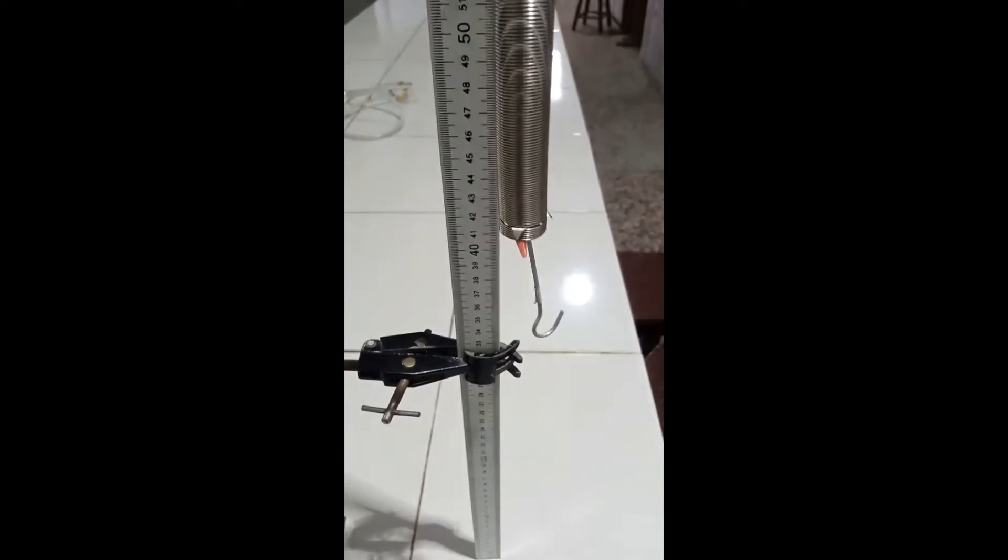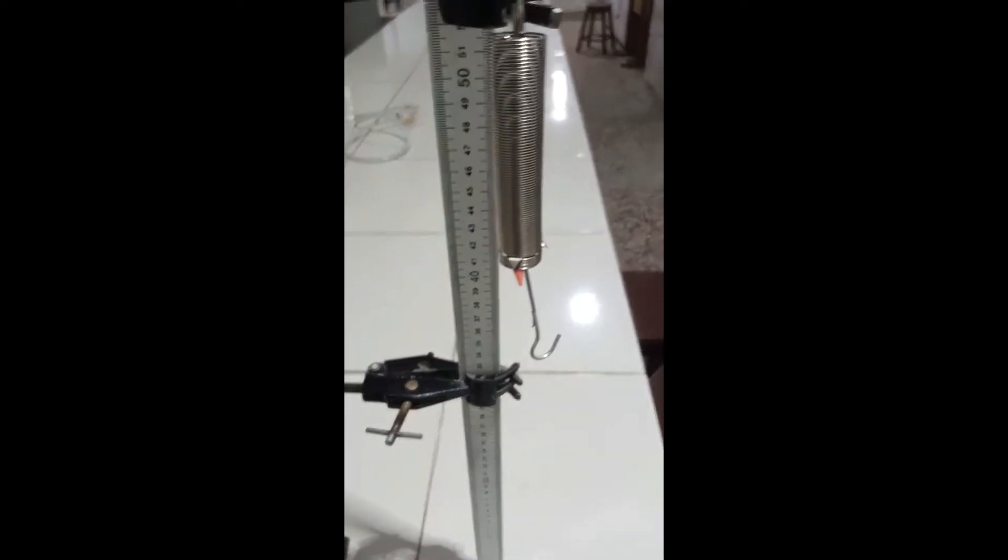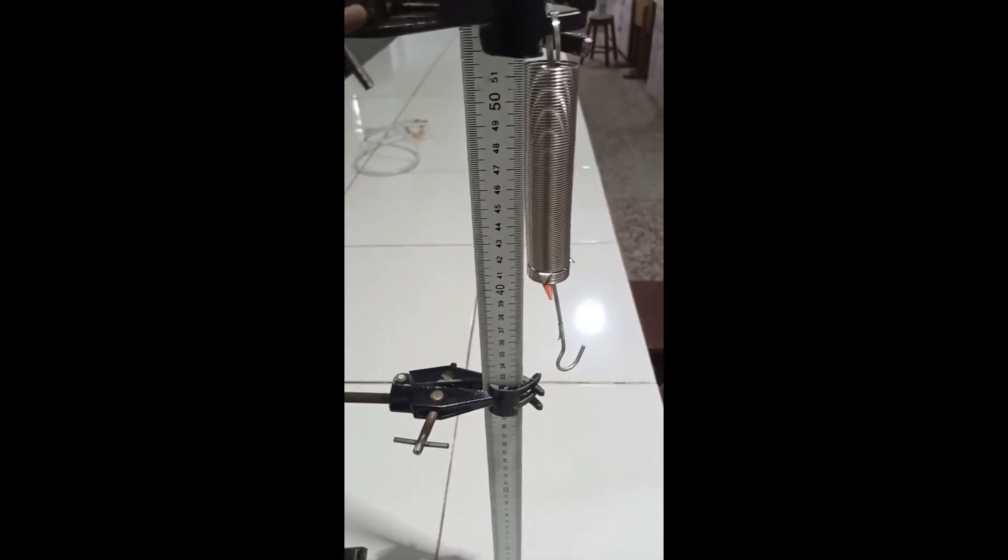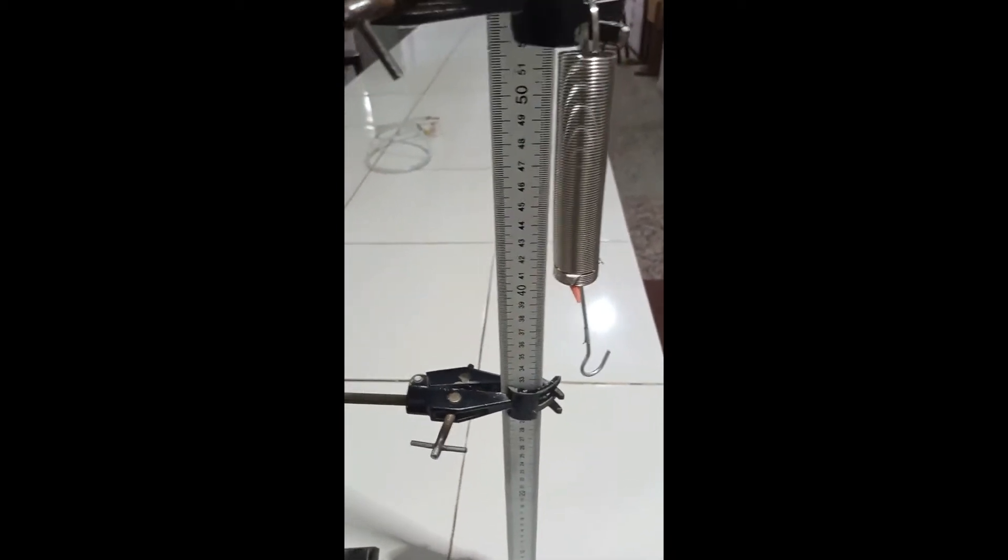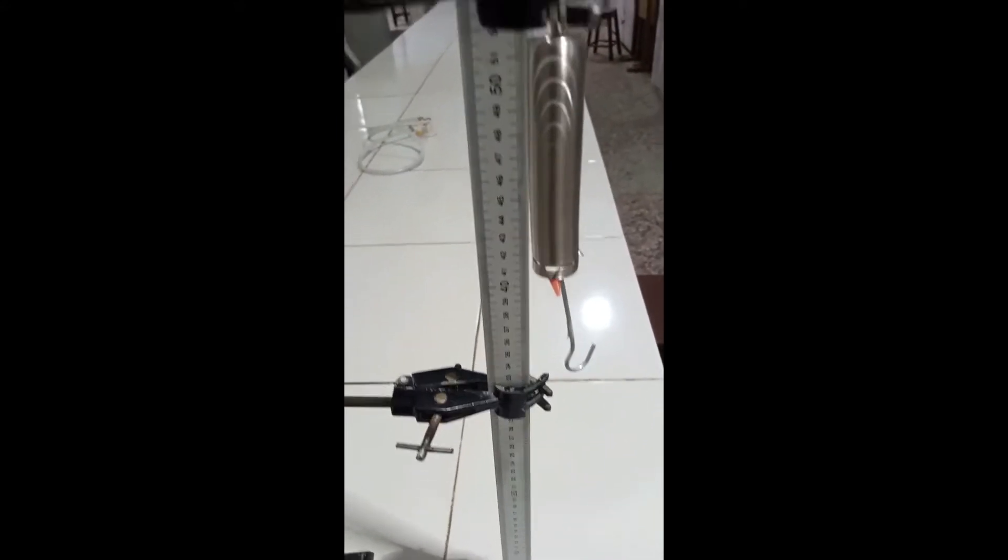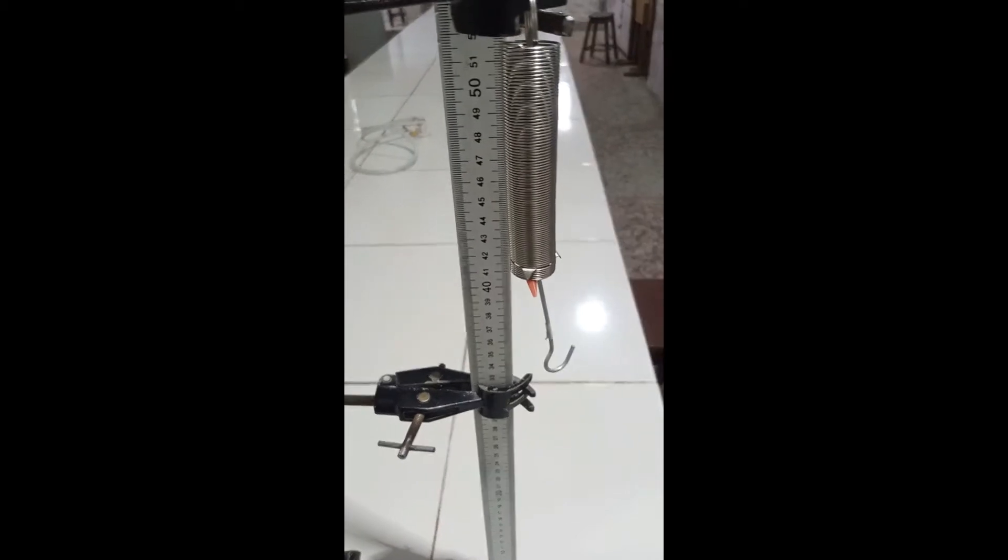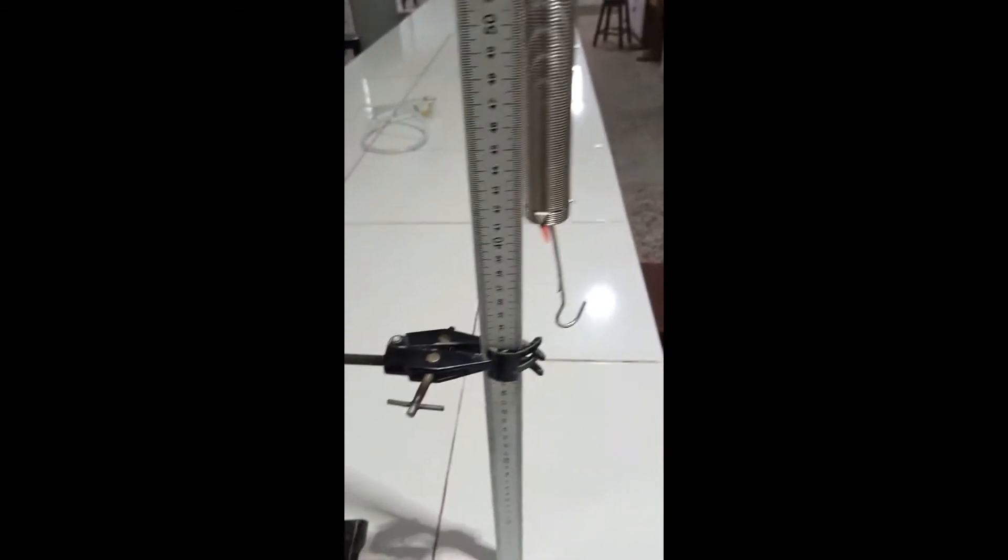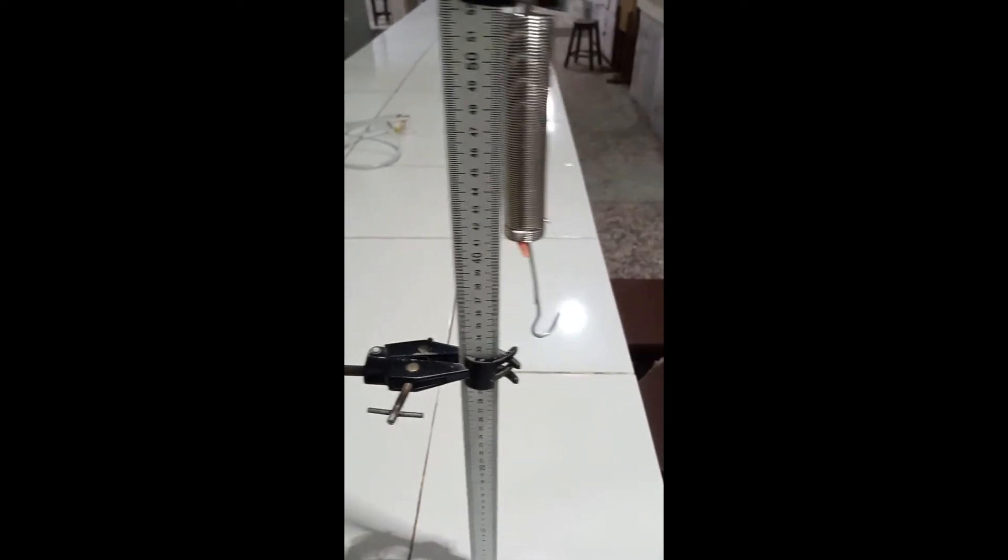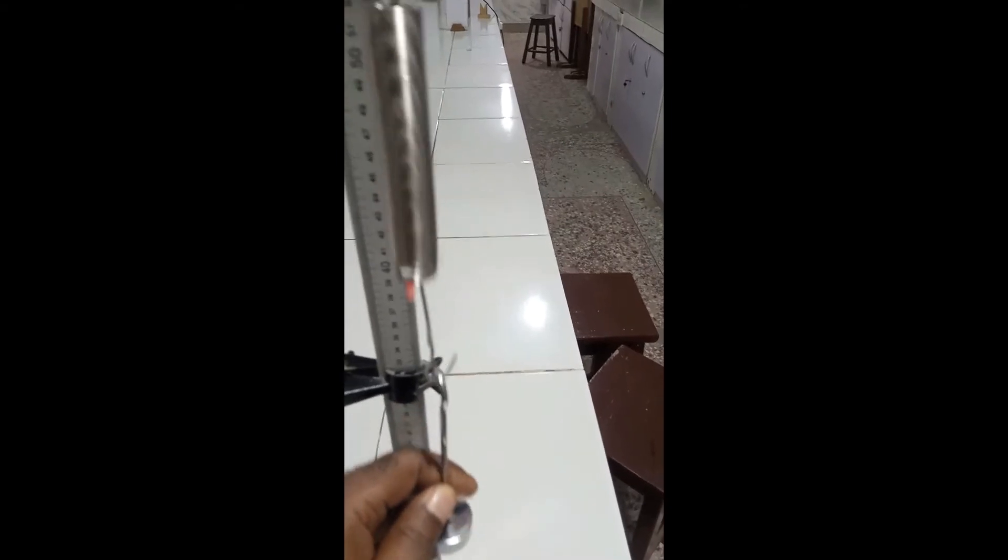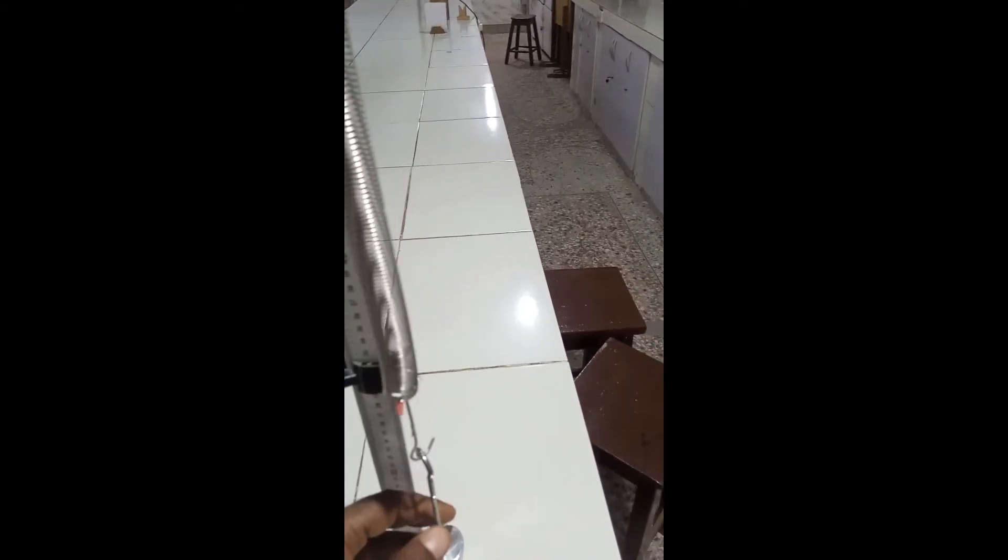So I'll note that down and then I'll begin to insert my masses, that is 0.1 kg masses, one after the other, about six readings. And then I would take adequate precautions in avoiding parallax error reading my meter rule and of course make sure that the elastic limit of this spiral spring is not exceeded.